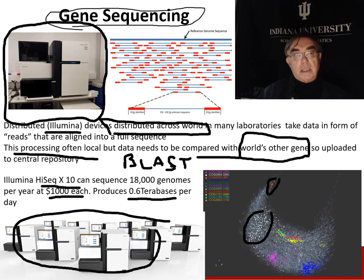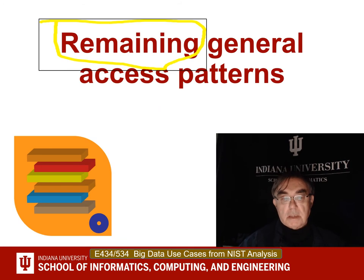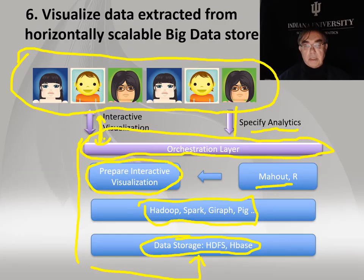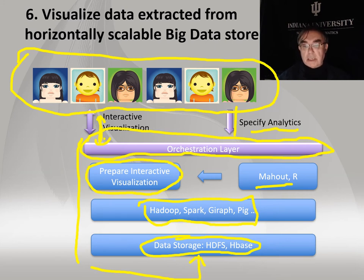We will return to the other general access patterns in the next lesson — the remaining five general access patterns described with a more enterprise point of view, because Bob Marcus invented these and that's his great expertise. Here we have users trying to interact with the big data software stack, which has four layers.